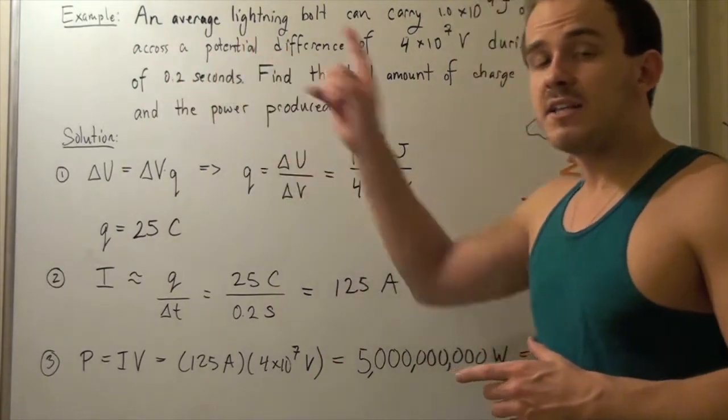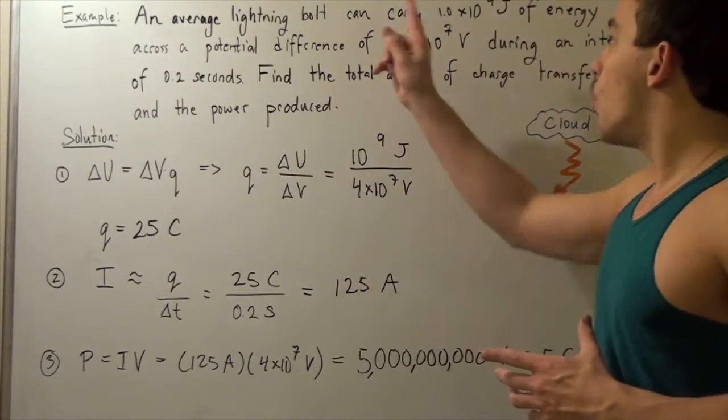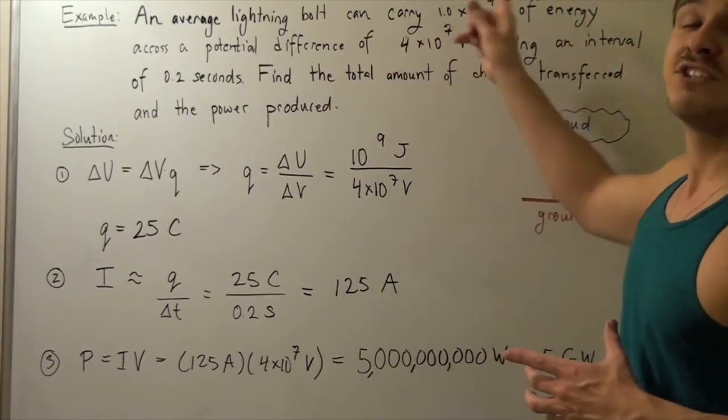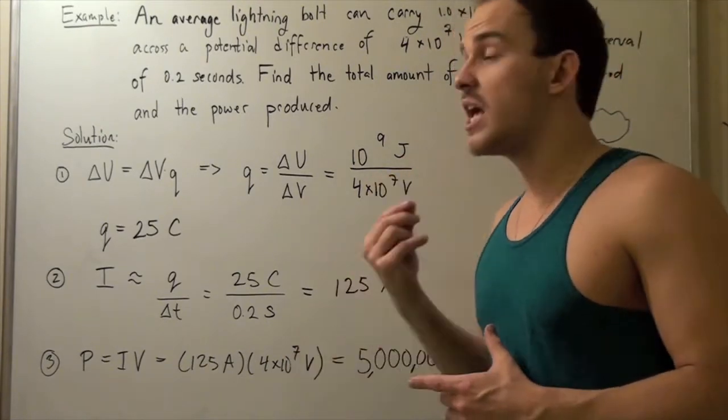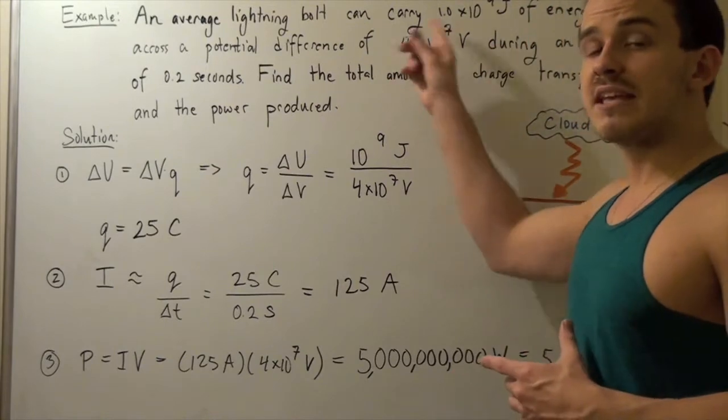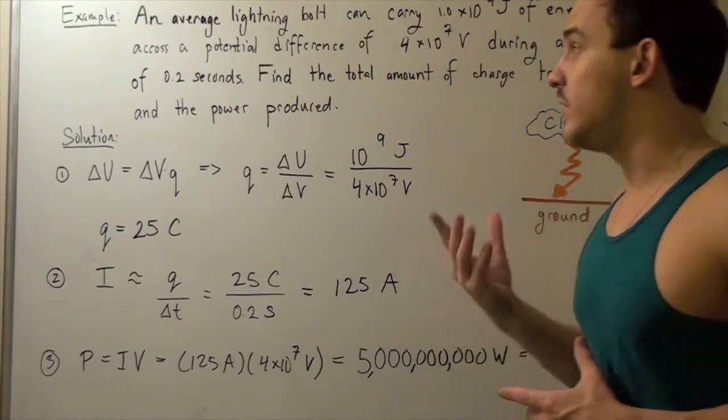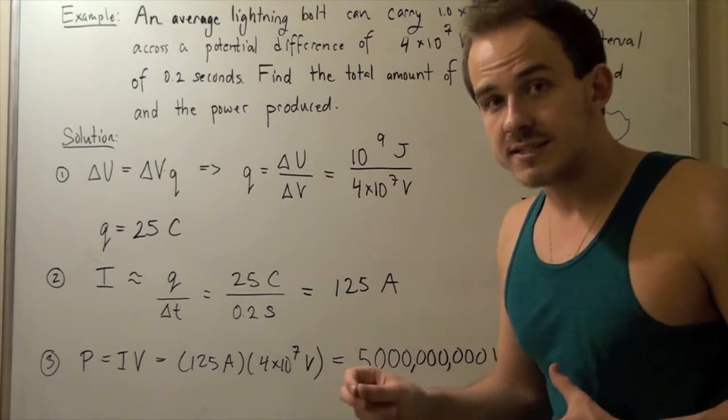An average lightning bolt can carry 1.0 times 10 to the 9 joules of energy across an electric potential difference of 4 times 10 to the 7 volts during a time interval of 0.2 seconds.